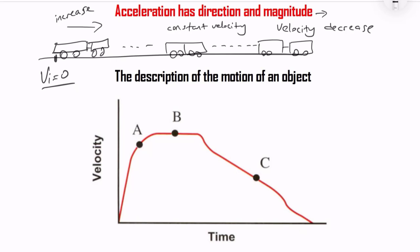Looking at the velocity-time graph, we have three points: A, B, and C. At point A, the velocity starts increasing — there is a change in velocity. Because velocity is increasing, we have acceleration, and that acceleration is positive.